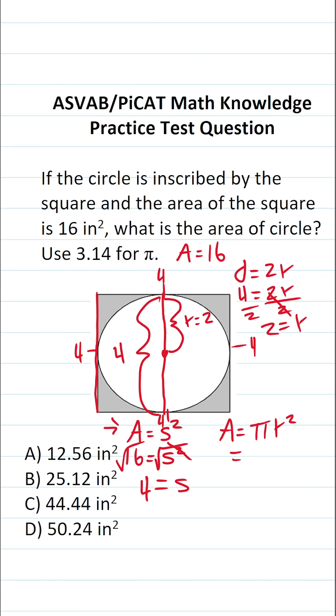Now that we know that, we can plug it into the area formula for a circle. This becomes pi times 2 squared. 2 squared is 2 times 2 or 4. So this becomes 3.14 times 4.